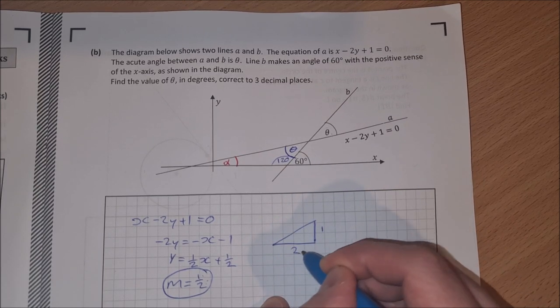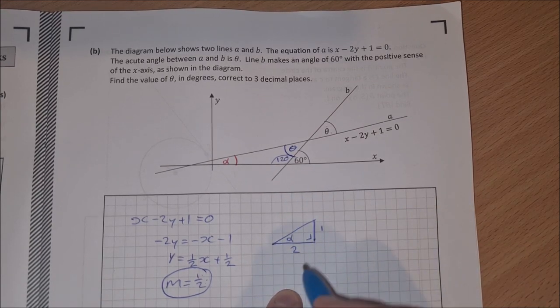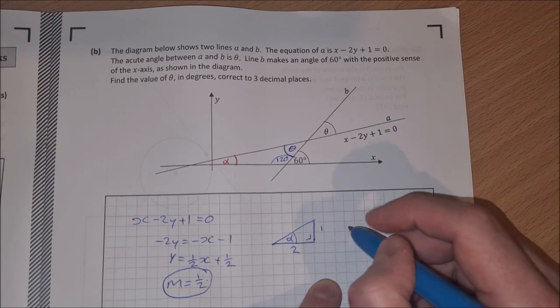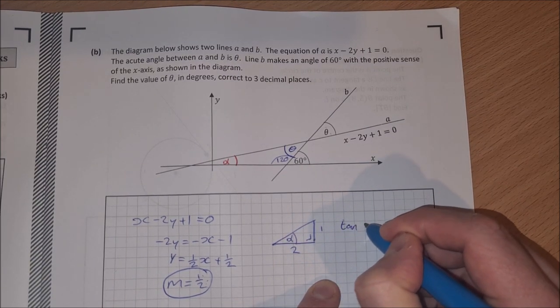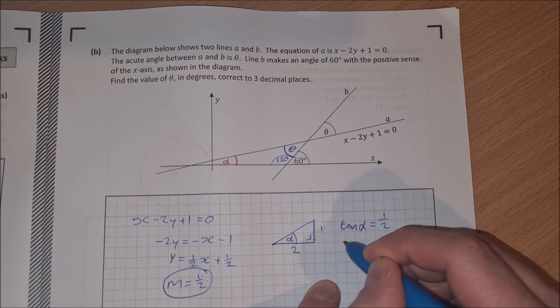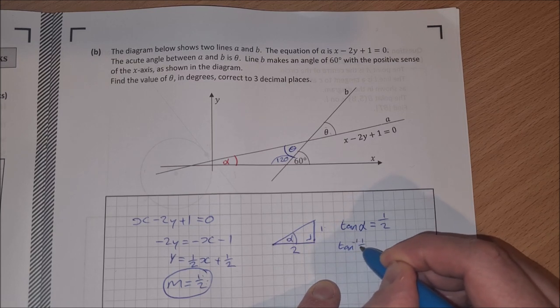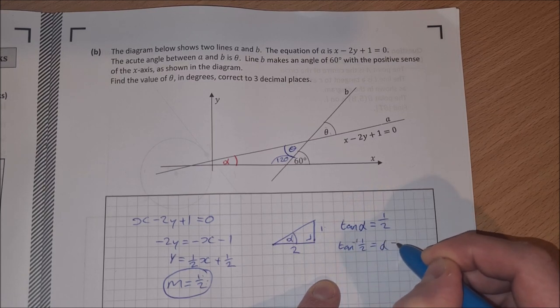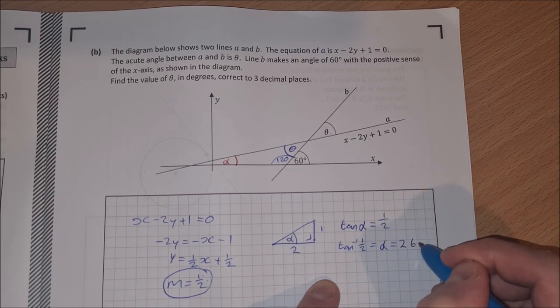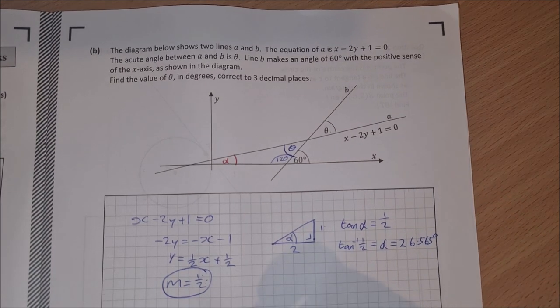We have a rise 1 and a run 2, that's the right angle, and that's my angle alpha. So I can just find this angle alpha now by using tan. The tan of alpha is equal to opposite over adjacent, which is 1 over 2, so the inverse tan of 1 over 2 is equal to alpha. And if you pop that into your calculator, you'll get alpha equal to 26.565 degrees.